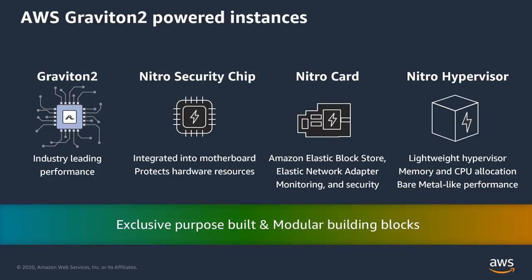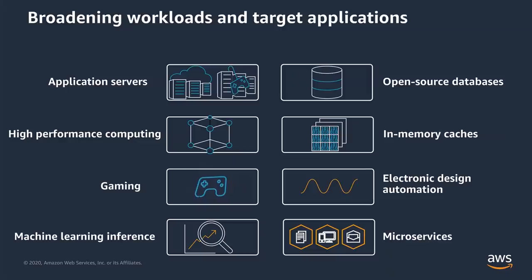These new instance types all use the AWS Nitro system. Variants of the newly announced storage types will soon be available with fast local NVMe instance storage.